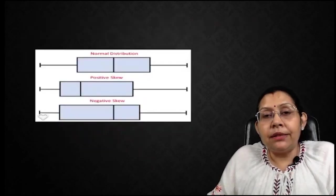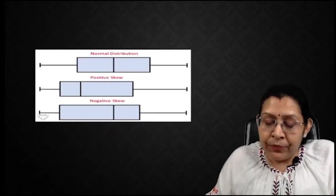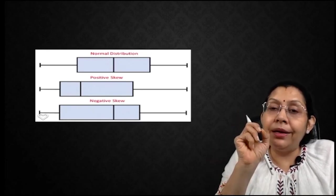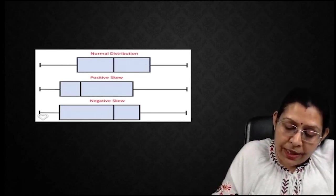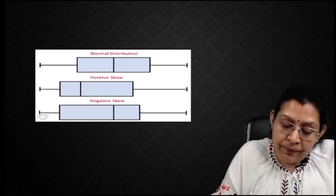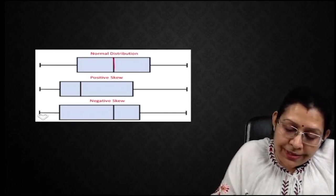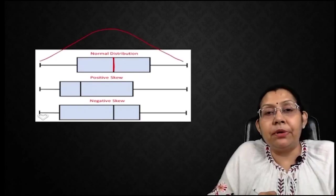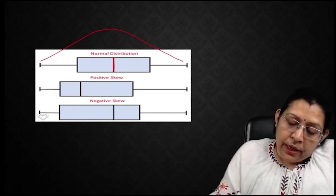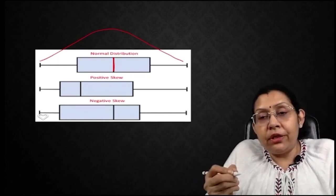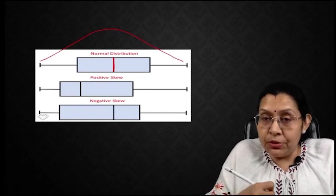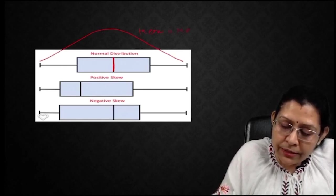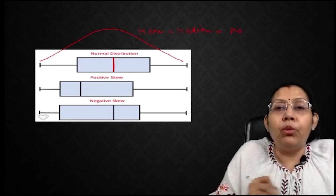Now another point is how we are going to identify symmetry. For this you have to see the location of the box and the location of the line inside the box. If the box appears in the middle of the whisker and the line appears at the center of the box, then it is a normal distribution pattern looking like a typical Gaussian curve. In a normal distribution pattern, all are the same — mean is equal to median, which is equal to mode.